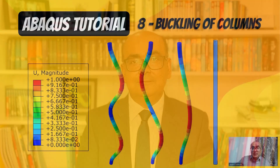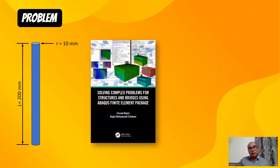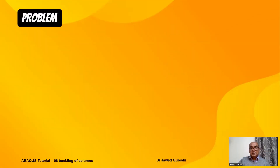First, the problem description. The problem I want to solve has a radius of 10 millimeters and a length of 200 millimeters. I have taken this problem from a textbook. The material is steel and it is a solid steel rod. I will not only solve this problem but also examine the effect of length on columns and the effect of boundary conditions.